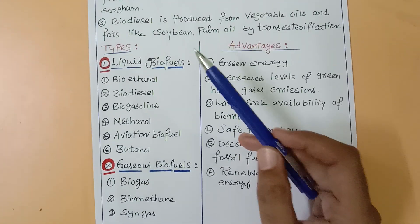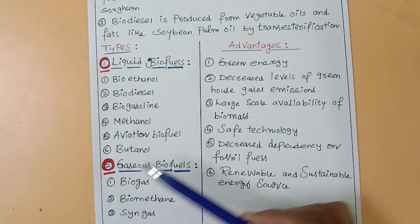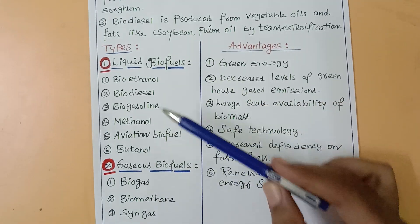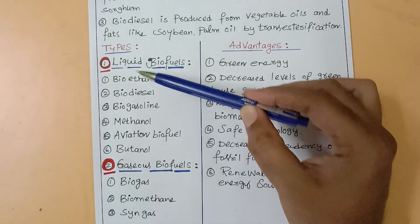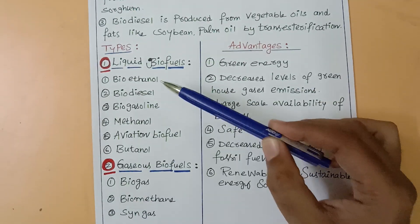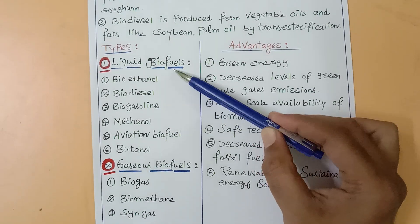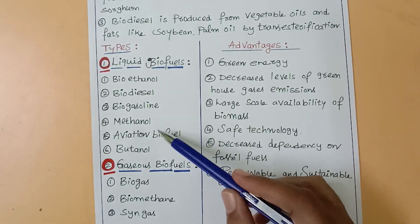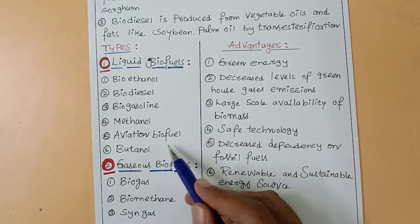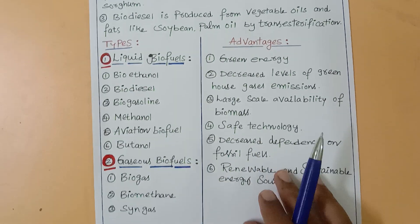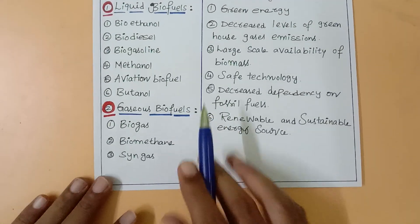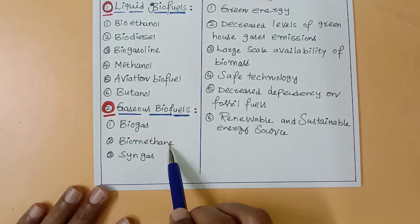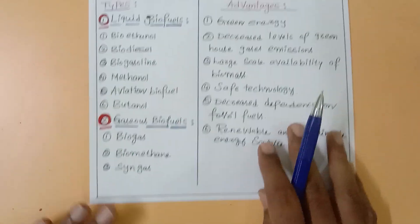We have types of biofuels. Biofuels are of two types: liquid biofuels and gaseous biofuels. The liquid biofuels include six important types: bioethanol, biodiesel, biogasoline, methanol, aviation biofuels, and butanol. The gaseous biofuels are biogas, biomethane, and syngas.